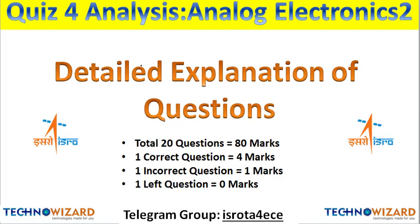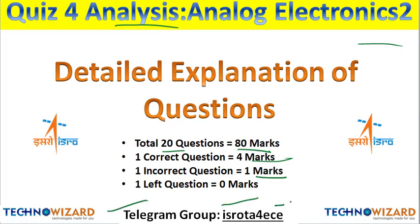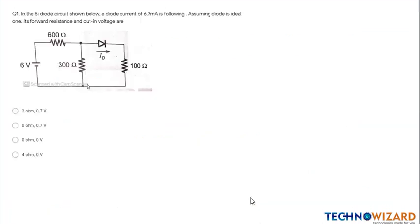Hey guys, welcome to Tekken Vizar. This is Rohit Sharma and in this video we are going to analyze our quiz based upon analog electronics, second quiz. There are a total of 20 questions and the total score will be 80 marks. One correct question equals 4 marks and one incorrect question is 1 mark. Those who have not joined the Telegram group, please join it — it's Ruta for EC — so that you can attempt the quiz.